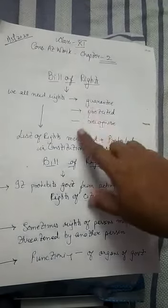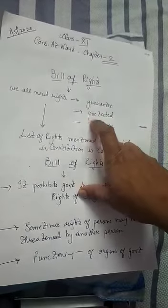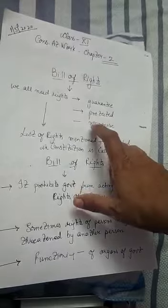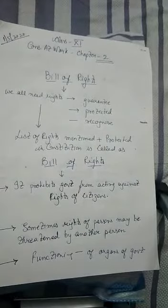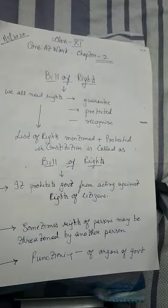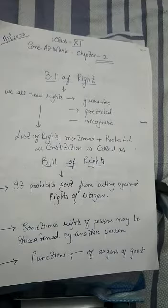Here I have discussed these things: guarantee ki adhikar milen hi milen, protected ki koi adhikar na le sake, recognize ki jo adhikar hai woh sahi tariqe se kaam karte hai ya nahi. Jab in rights ko hum protection dete hai aur hum inhe mention karte hai in our law book, that is called as constitution, we call them as Bill of Rights. Got it?